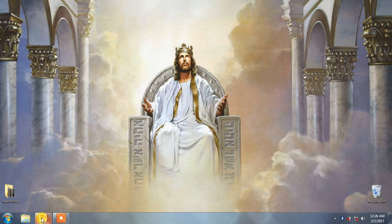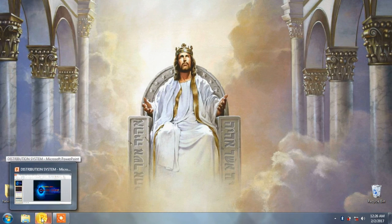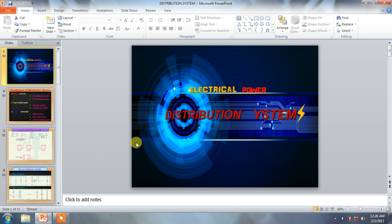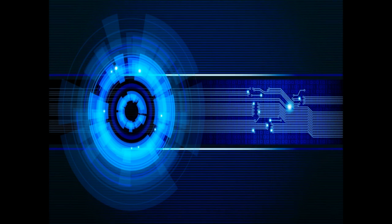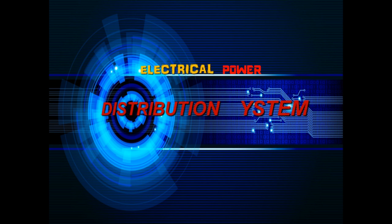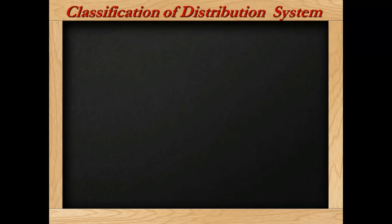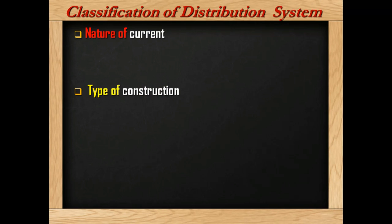Hi friends, today I am going to show you about classification of distribution systems. These are basically classified according to three categories: nature of current, type of construction, and scheme of connection.